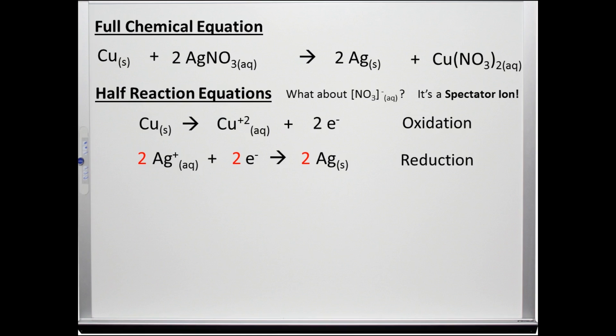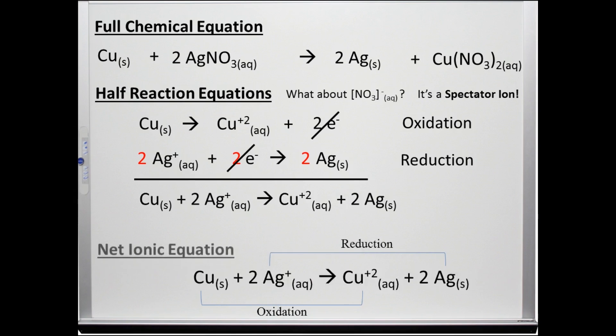This leaves no electrons unaccounted for. The sum of the two half-reactions is called the net ionic equation. It only shows the substances that are oxidized and reduced.